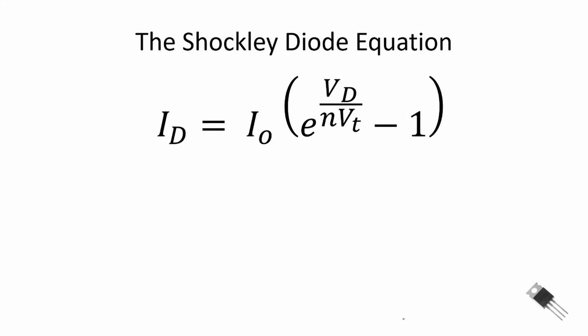A photovoltaic cell consists of semiconductor material with a p-n junction. Therefore, it's important to review the Shockley diode equation that relates the current through the diode to the voltage across the diode. The current through the diode I_d is equal to the reverse bias current I_O times the quantity E raised to the power V_D — the voltage across the diode — divided by N times V_T.